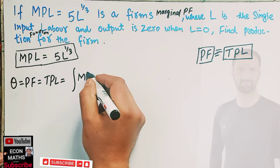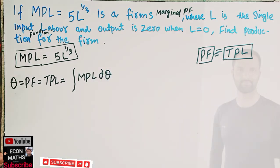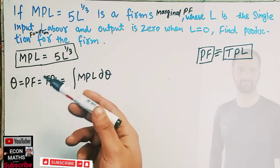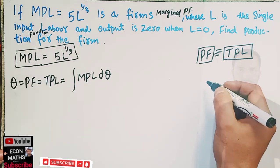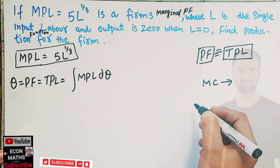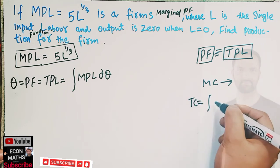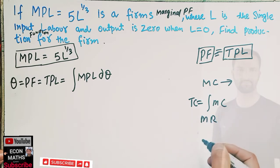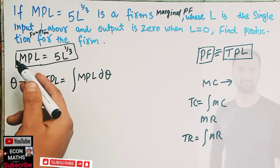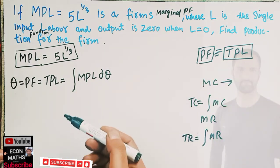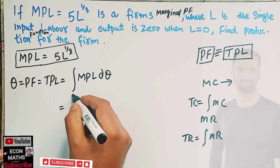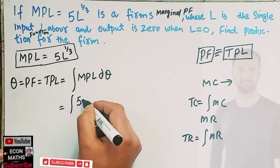The production function will be equal to the integral of the marginal product of labor with respect to L. Whenever we have to calculate total from marginal we take the integral of marginal. For example, if we have been given marginal cost, to find total cost we integrate marginal cost. Similarly, if we are given marginal revenue, to find total revenue we integrate the given marginal revenue. So here, the production function is the integral of the marginal product of labor: the integral of 5L to the power 1/3.